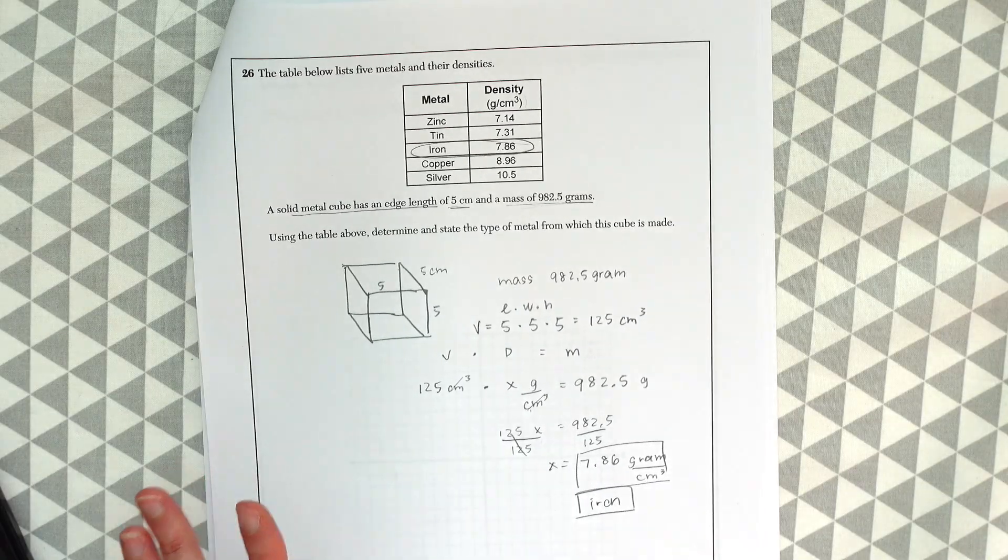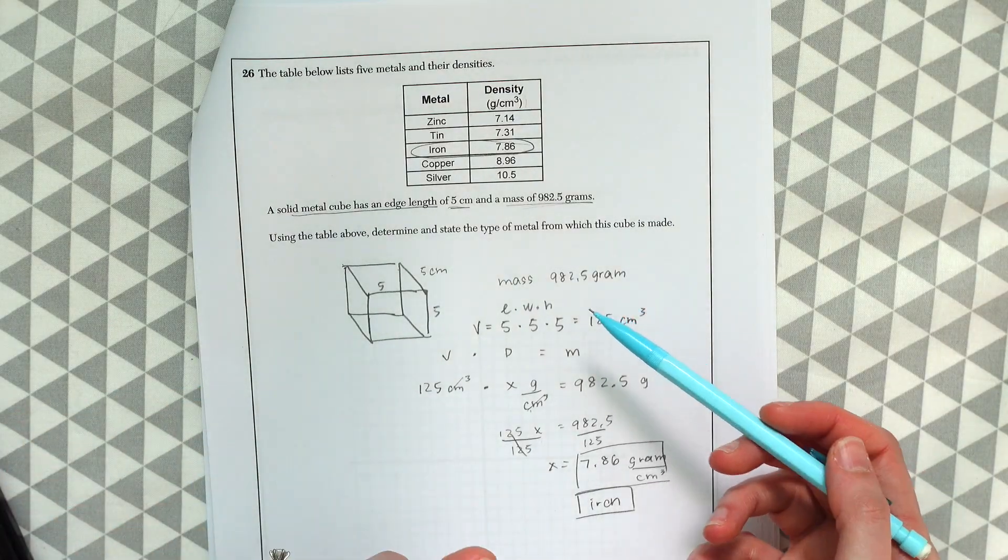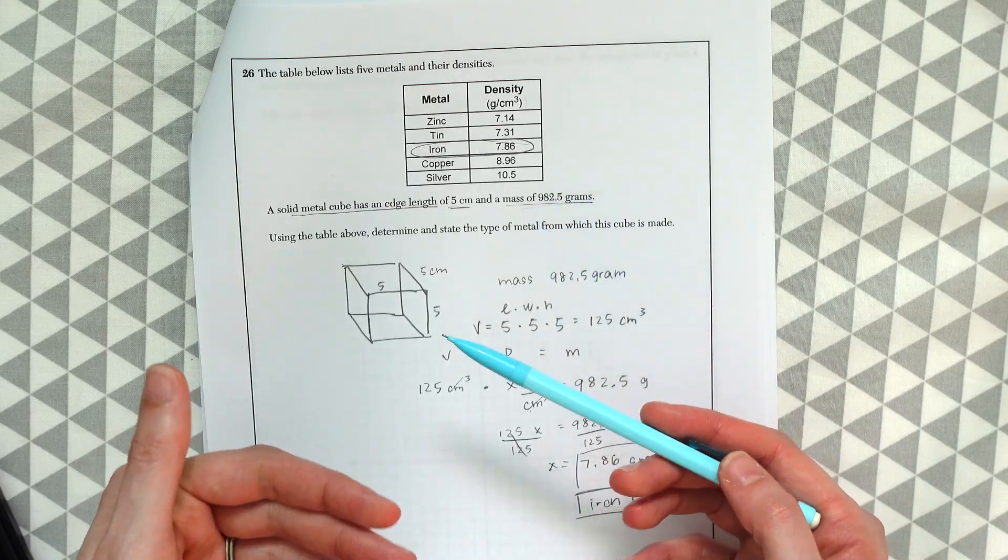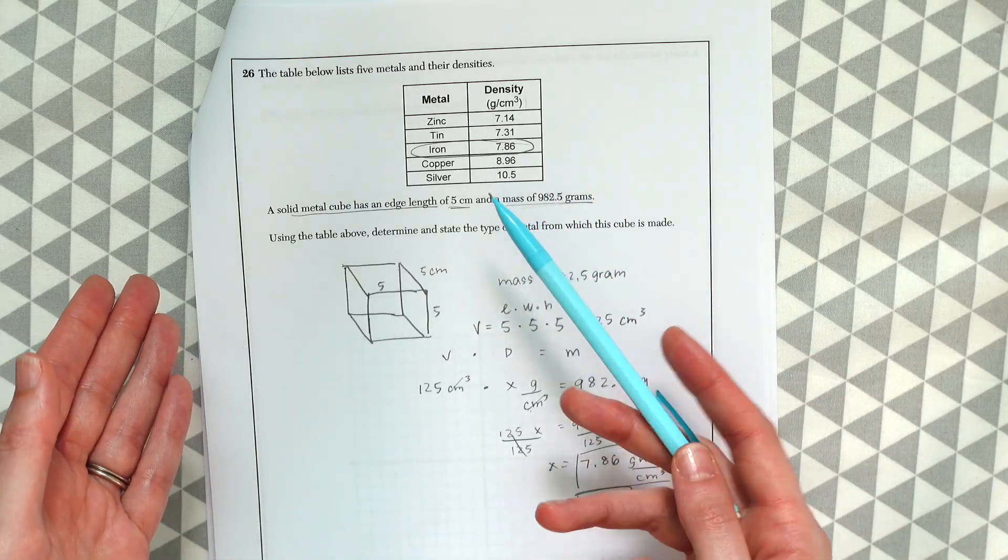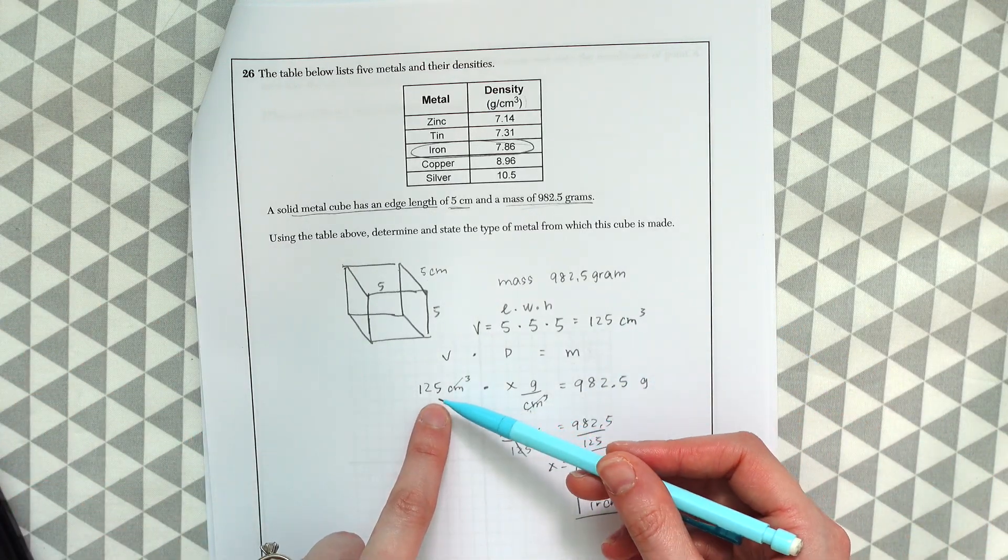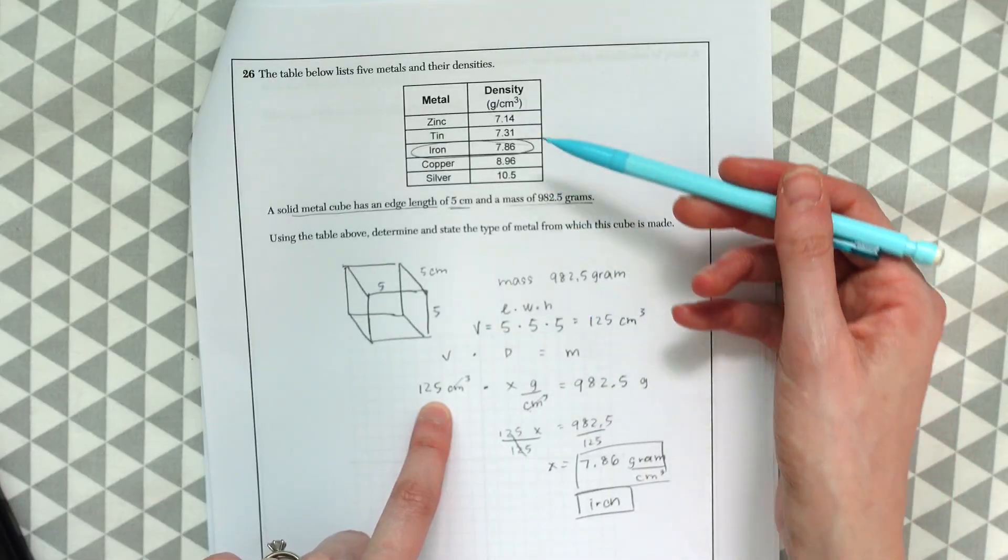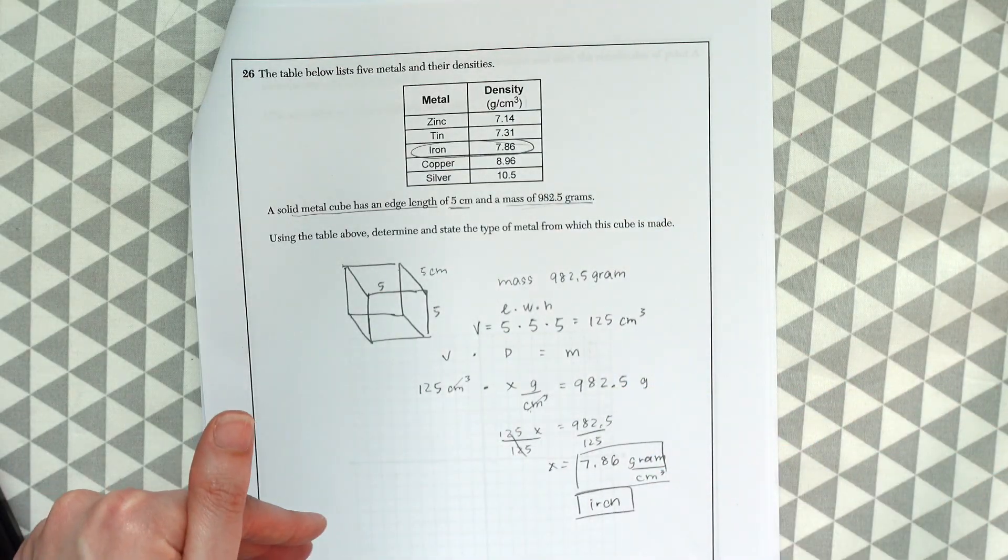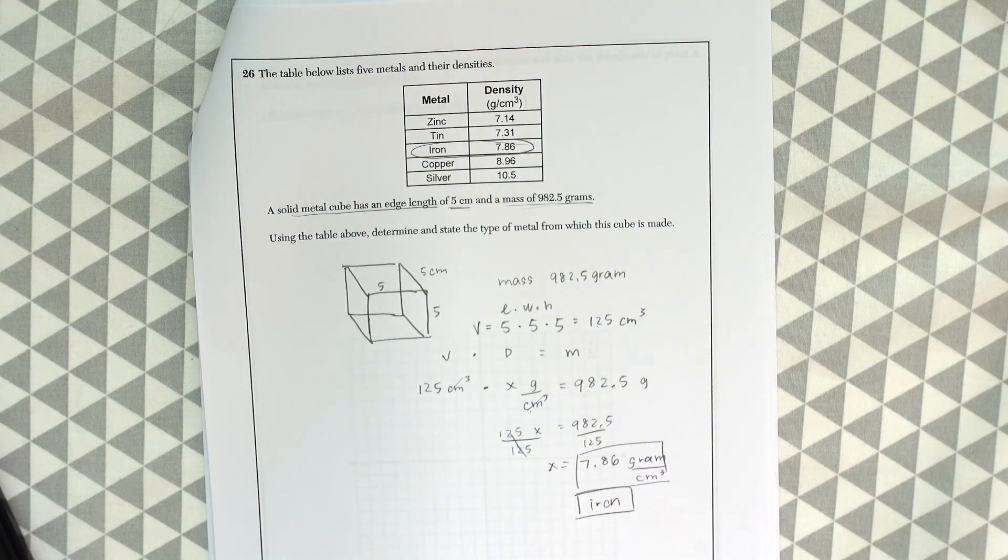So this looks like it might be complicated but really it's just like those other questions where we're finding the mass but instead of finding the mass we're finding the density. You could also guess and check and see which one works. You could have also done 125 and then multiplied times each of these to see what gives us 982. That's another way to go you could guess and check. So there's multiple ways to come to this answer.